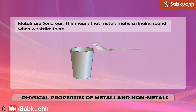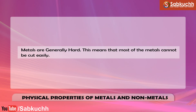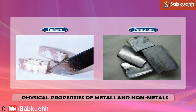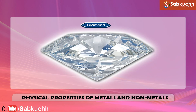Sonorousness. Metals are sonorous, which means that metals make a ringing sound when we strike them. Non-metals are not sonorous. Hardness. Metals are generally hard, which means that most metals cannot be cut easily. Sodium and potassium are exceptional metals that are soft and can be cut easily with a knife. Most solid non-metals are quite soft and can be cut easily. Only one non-metal, diamond, is very hard.